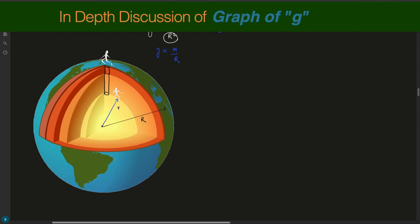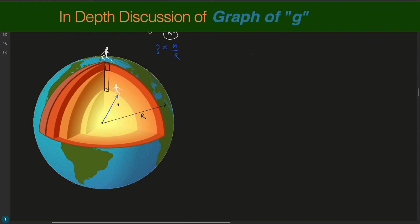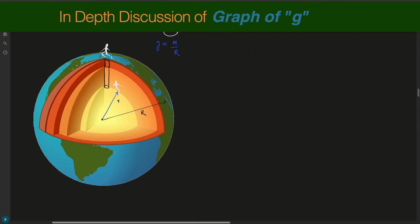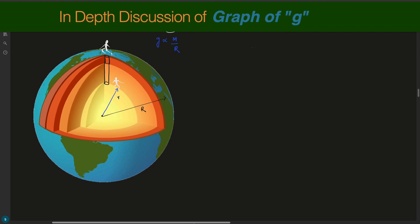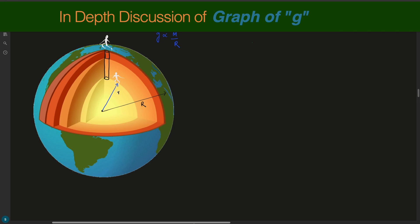In this class, we are going to learn how the graph of gravitational acceleration will look like when we are going deep inside the Earth's surface and when we are moving away from the Earth's surface. How this graph will look like and how you can draw the graph of the variation of gravitational acceleration.